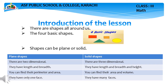There are shapes all around us. Humaray aas paas bohat saray shapes hain. The four basic shapes — humaray paas four basic shapes hain jo abhi aap ko saamne picture mein nazar aa rahay hain — rectangle, square, triangle and circle. Shapes can be plain and solid. Shape aap ka plain bhi ho sakta hai aur solid bhi.